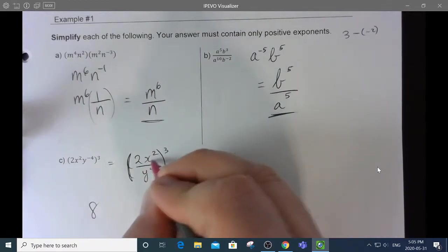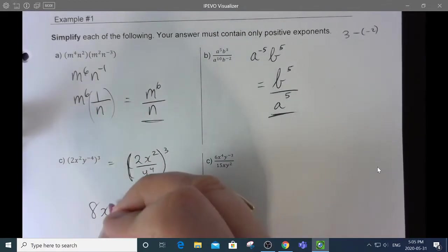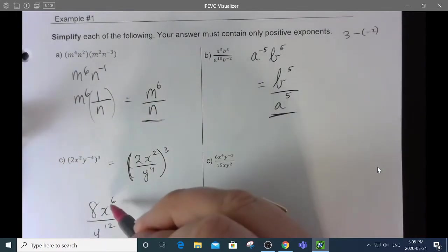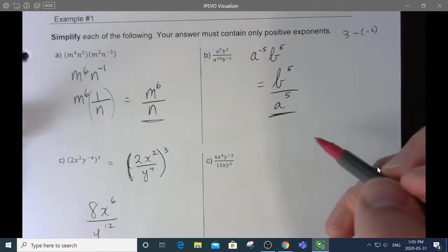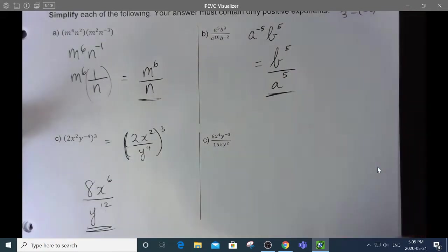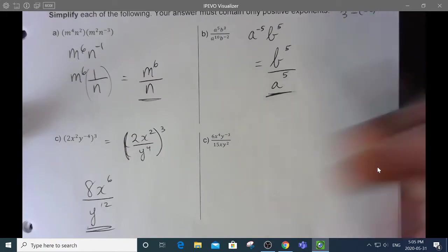So, now I get to distribute that cube into everything. 2 cubed is 8. x squared cubed is x to the 6. And y to the 4 to the 3 is y to the 12. And make sure you realize you can't simplify those two guys. They have different bases. So, there's no exponent law that allows you to simplify things that have different bases.